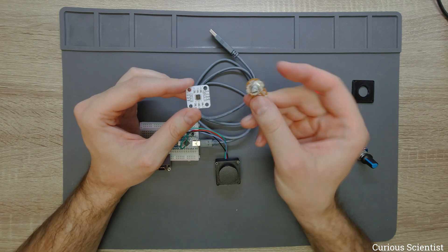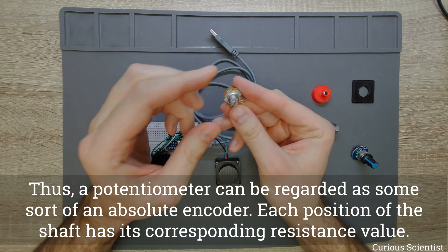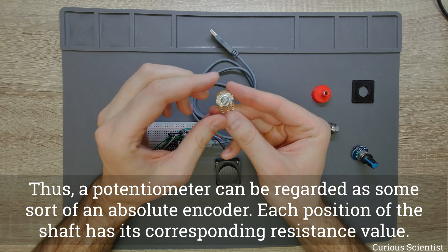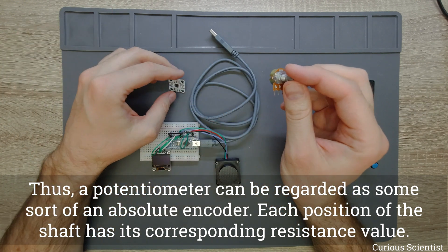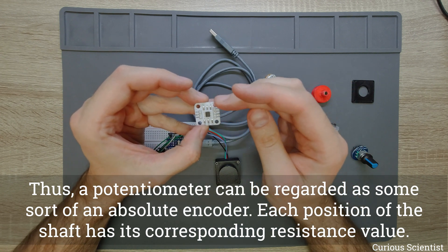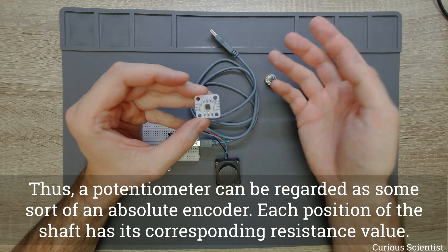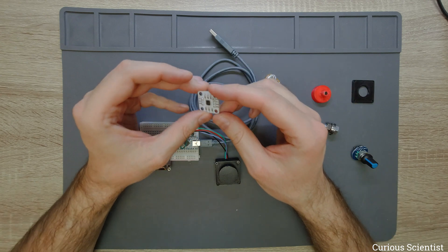So in that sense, it works in the same way as a potentiometer because we just arrived to the end of the limits, where you cannot turn the shaft anymore. And in that sense, when you start to turn, then the numbers just overflow and you start counting from zero again.